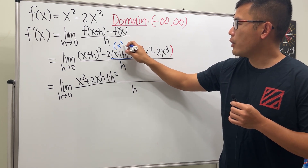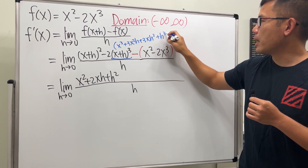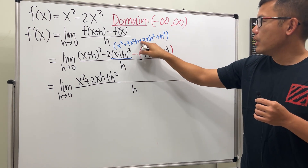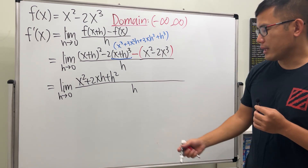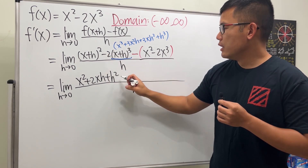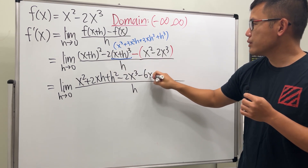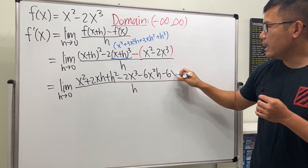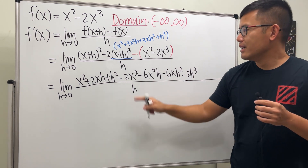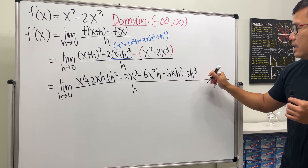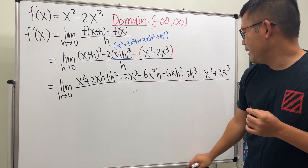The expansion of x plus h to the third power equals x cubed plus 3x squared h plus 3xh squared plus h cubed — you can use Pascal's triangle for this. Multiplying by negative two gives: negative 2x cubed, minus 6x squared h, minus 6xh squared, minus 2h cubed. Then distributing the negative from subtracting f of x gives negative x squared plus 2x cubed.